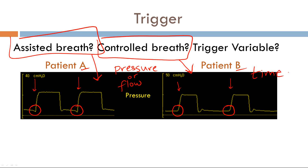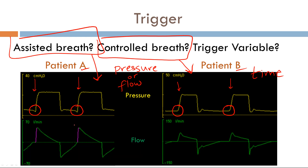Taking this a step further — for patient A's assisted breath, how do we know whether the trigger variable is pressure or flow? On the Servo-i ventilator, if you look at the flow scalar, there is a pink line. That pink line designates what the trigger variable is. In this case, the trigger variable is flow. The operator can determine the trigger variable — I could have easily set it to pressure, in which case the pressure line would be highlighted pink instead. For patient B's controlled breath, there is no pink line, and neither flow nor pressure is the trigger, so the trigger variable is time.